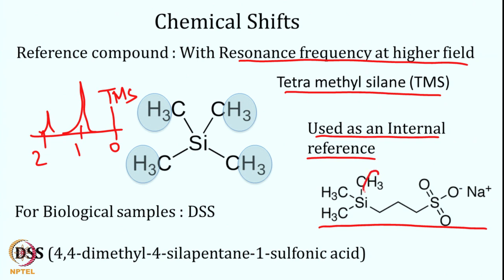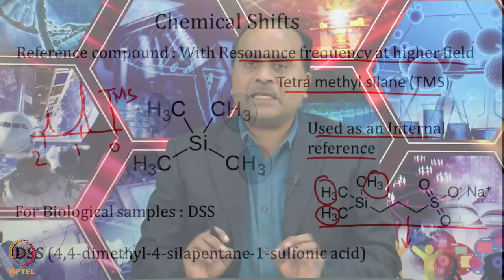These are internal references, which must not interact with or perturb the compound of interest — they must be inert. However, if they do interact with the experimental compound, we use external referencing: we record a separate experiment with only the reference compound in the same solvent, same buffer, and same pH, then keep the TMS or DSS signal at zero and express all other frequencies relative to that. There are also other reference compounds: tetramethylsilylpropionate (TSP) and DSS. For 13C, again TMS, TSP, or DSS is used at 0 ppm. For 15N, ammonium chloride or ammonia can be used, and for 31P, 85% phosphoric acid is used.